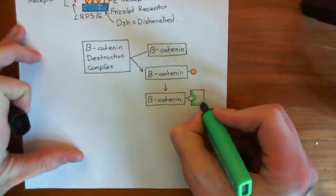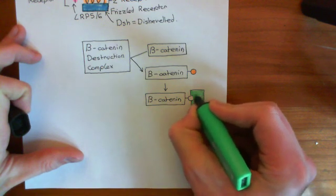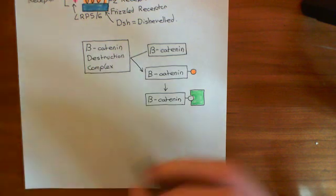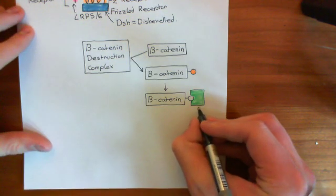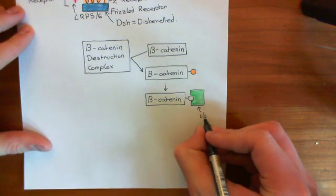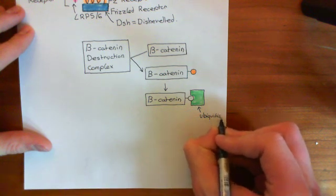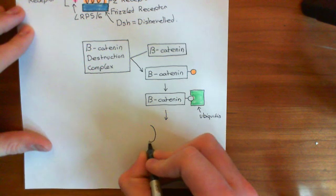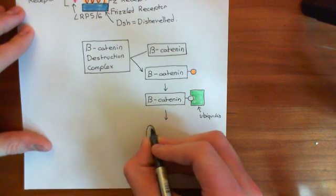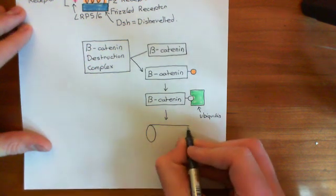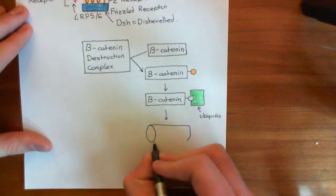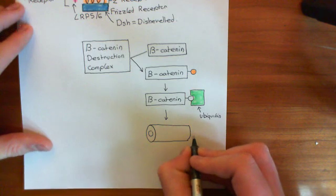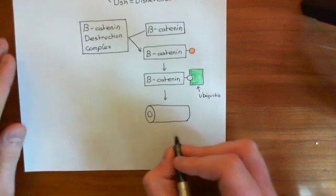Once beta-catenin has got this ubiquitin bound to it, and in fact if anything gets ubiquitin bound to it, then it ends up being targeted for proteasomal destruction. It goes to the proteasome, which is quite a sinister thing in the world of proteins. It's a tube, and proteins go in one end and amino acids come out the other end. It breaks them into pieces. It's quite formidable if you're a protein.